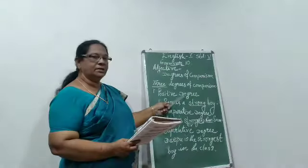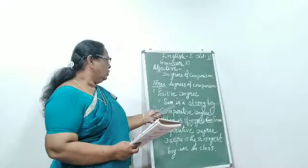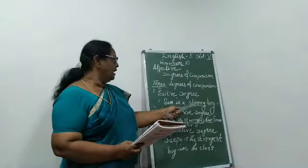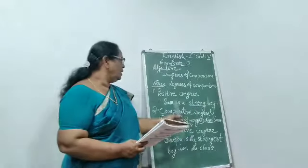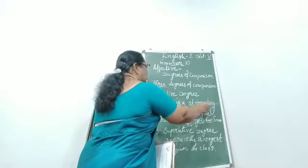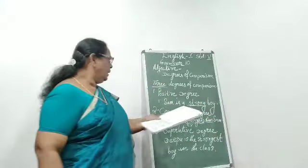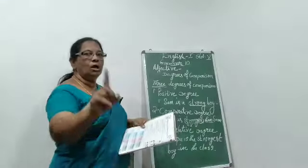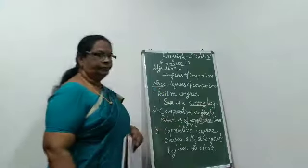Positive degree means that is the base form of the adjective. See the example on the board: 'Sam is a strong boy.' What kind of boy is he? Strong. I underline the word 'strong' — that is the adjective. It is the positive degree. How many persons are there? Only one person. Sam is a strong boy.